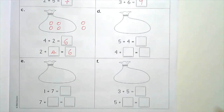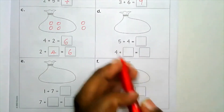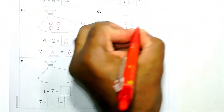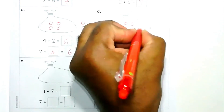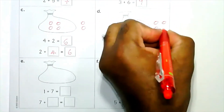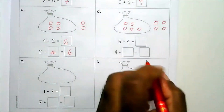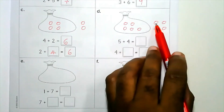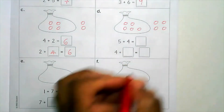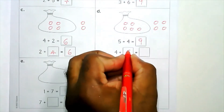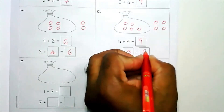Part D: five and four. Draw five inside — one, two, three, four, five — and four on the outside — one, two, three, four. Using the greater number and count on: five, six, seven, eight, nine. We write nine. Four plus five equals nine.